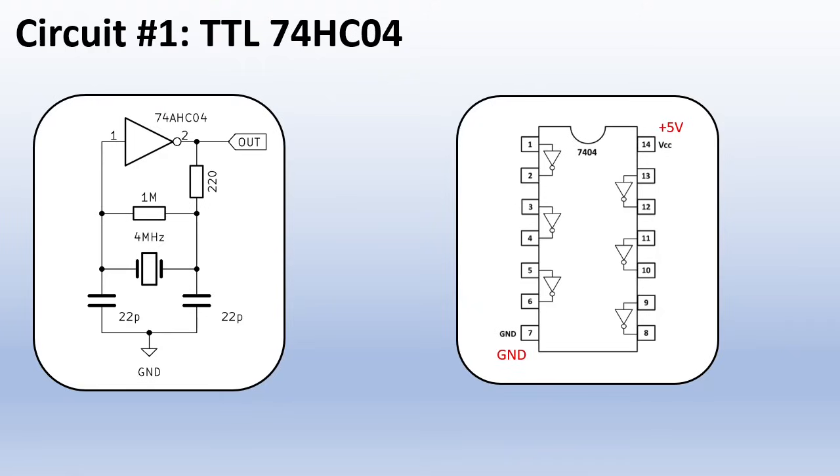The first circuit is a Pierce oscillator, a very popular type used in most digital circuits to create the clock. At the heart of the first circuit is a 74HC04 hex inverter chip. As the name implies, its job is to invert any signal it receives. The magic happens when we connect the output to the input via this one megaohm resistor. We have just created an unstable state.